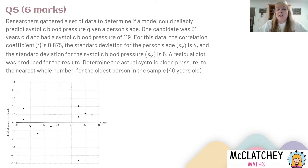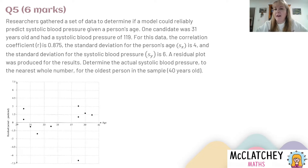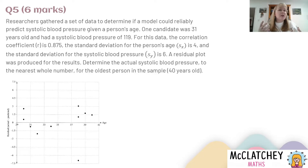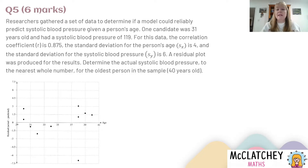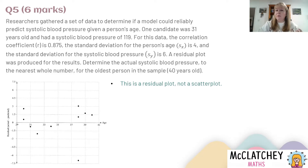The question asks us to determine the actual systolic blood pressure to the nearest whole number for the oldest person in the sample — 40 years old. When I first saw this question I thought, what's going on here? It's kind of an evil genius question. It's very unfamiliar, because I was thinking maybe I need to know something about whether this is an appropriate linear model from the residual plot. But actually I've got to work out the actual blood pressure of the oldest person, the 40-year-old. This is like using Polya's problem-solving model — we've seen some important information, now we're planning what to do next.